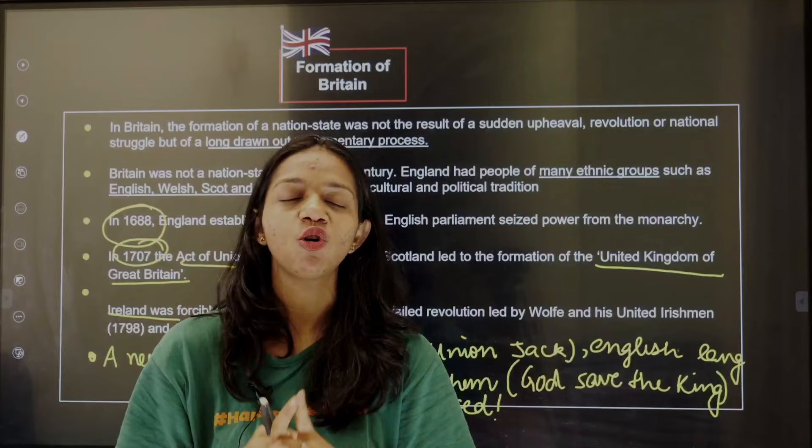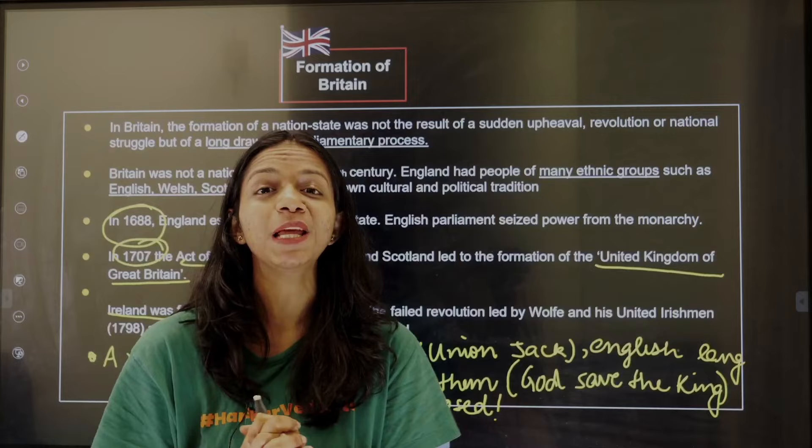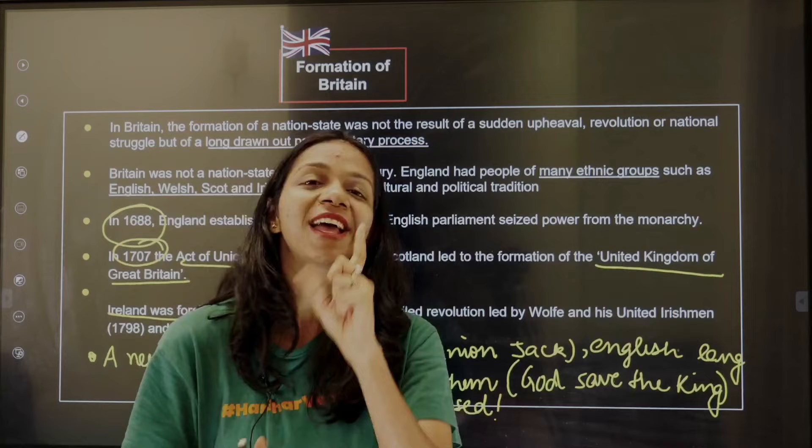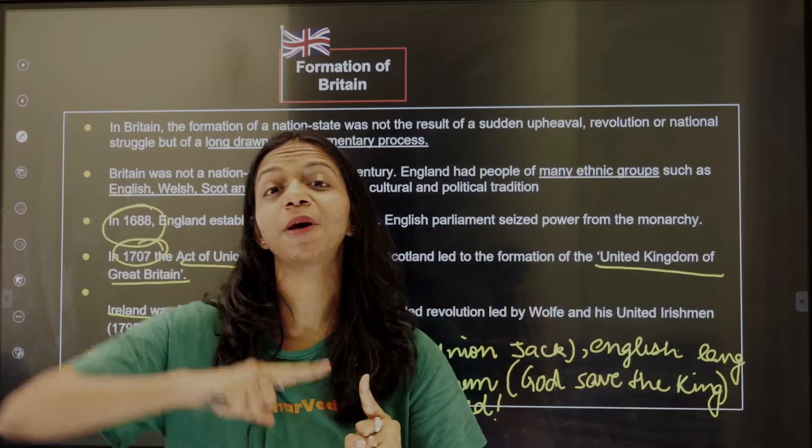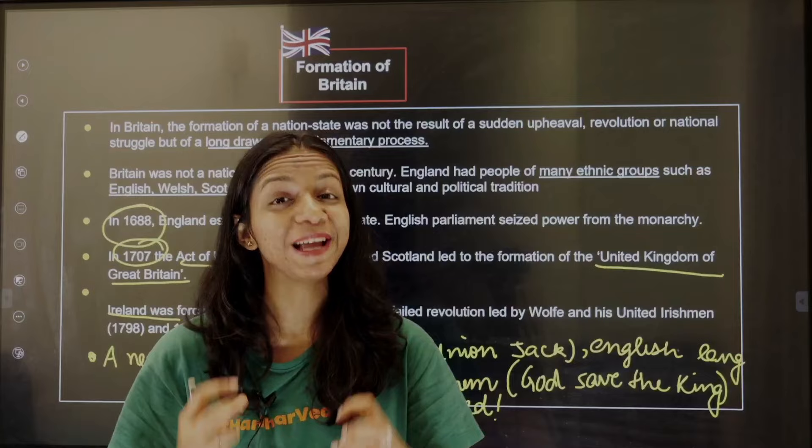Scottish, English, Welsh, and Irish. It was only in 1688 when the British nation was established, when the British parliament took power from the monarch. This is a strange case because unlike Germany and Italy, the British nation didn't make war, but established itself through a proper parliamentary process.